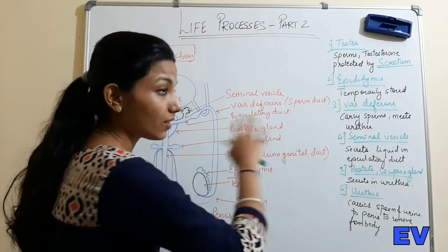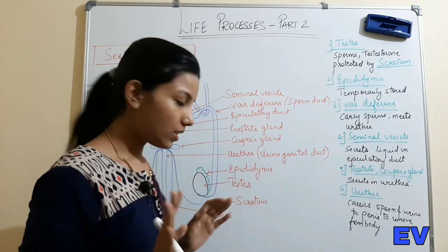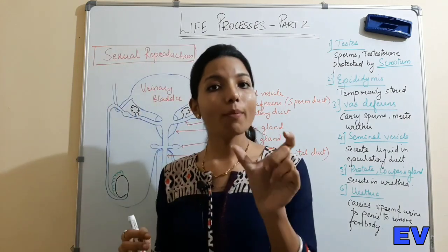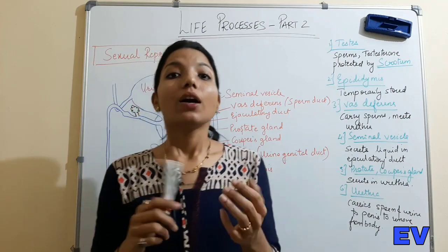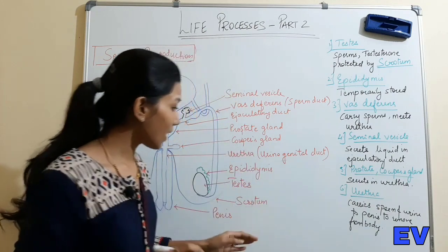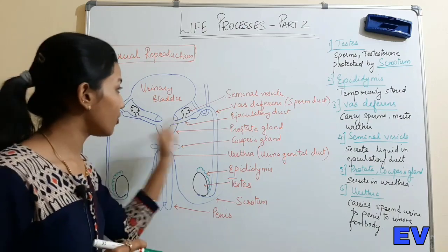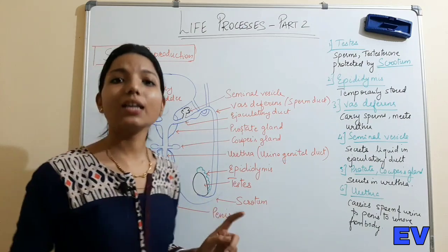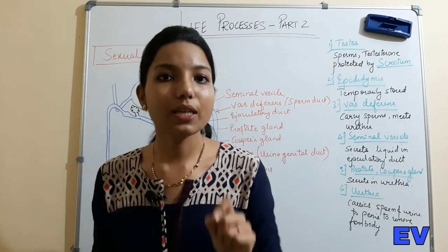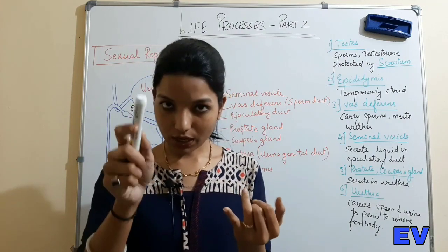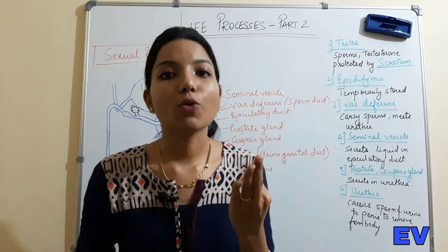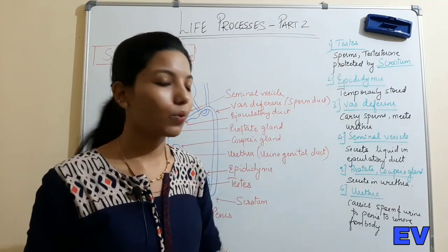The tube is called the urethra - you don't need to write 'urinogenital duct', just write urethra. The urethra is the common passage or common tube through which both urine and sperms pass out through the penis. The semen exits the body through the penis via the urethra.